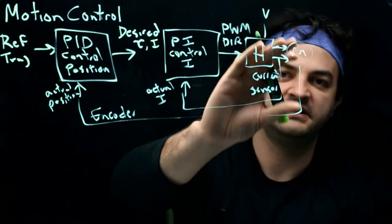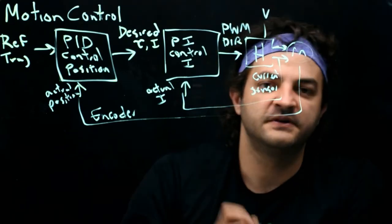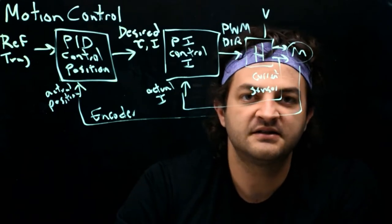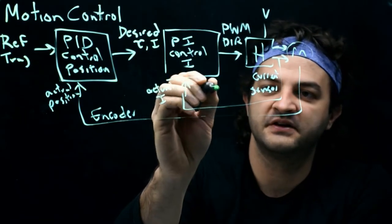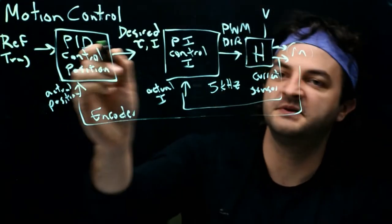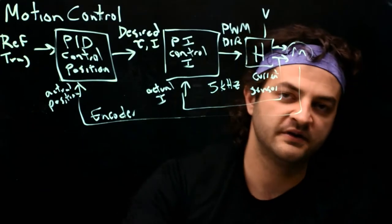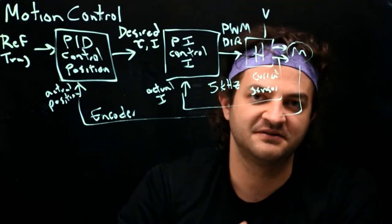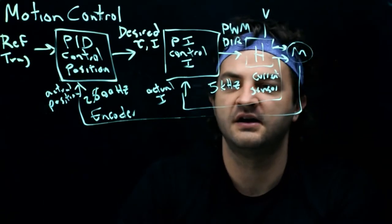The current can change with the electrical time constant of the motor, which is related to resistance and inductance — typically very fast. So we'll do current control at something like 5 kilohertz because the current can change that fast. But the position of the motor can't change nearly that fast. With so much inertia in the motor and load, we don't need to read the encoder 5,000 times a second. Instead, we'll do something like 500 Hz or 200 Hz for position control.